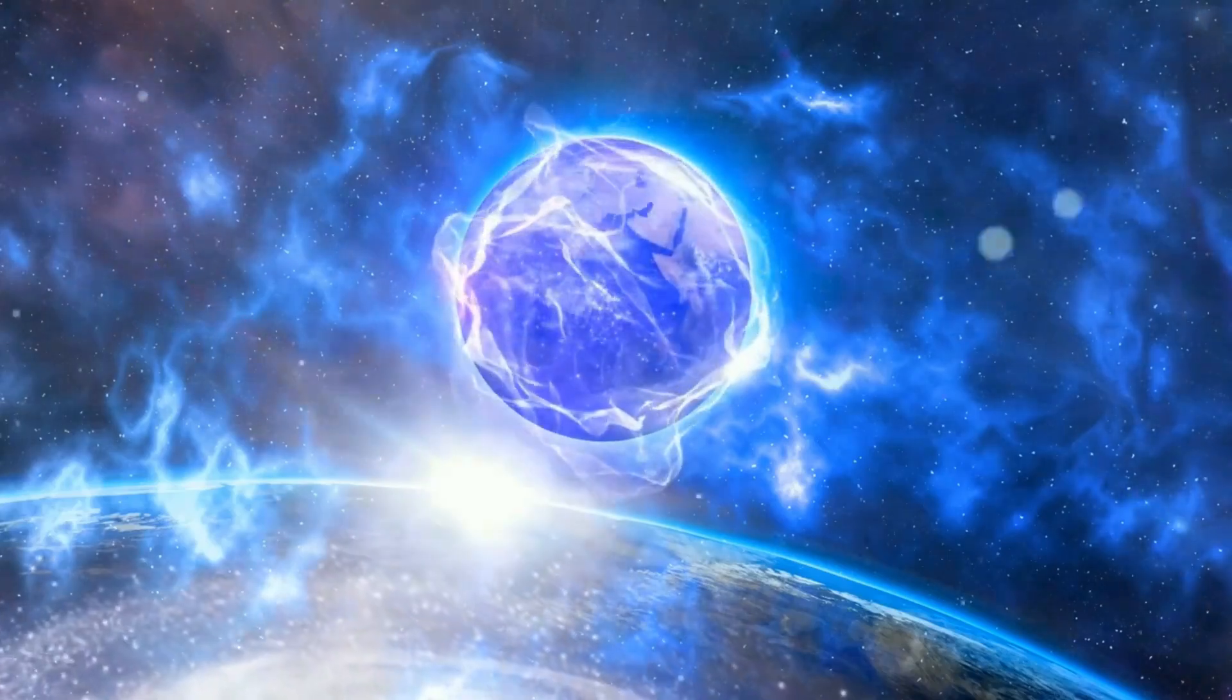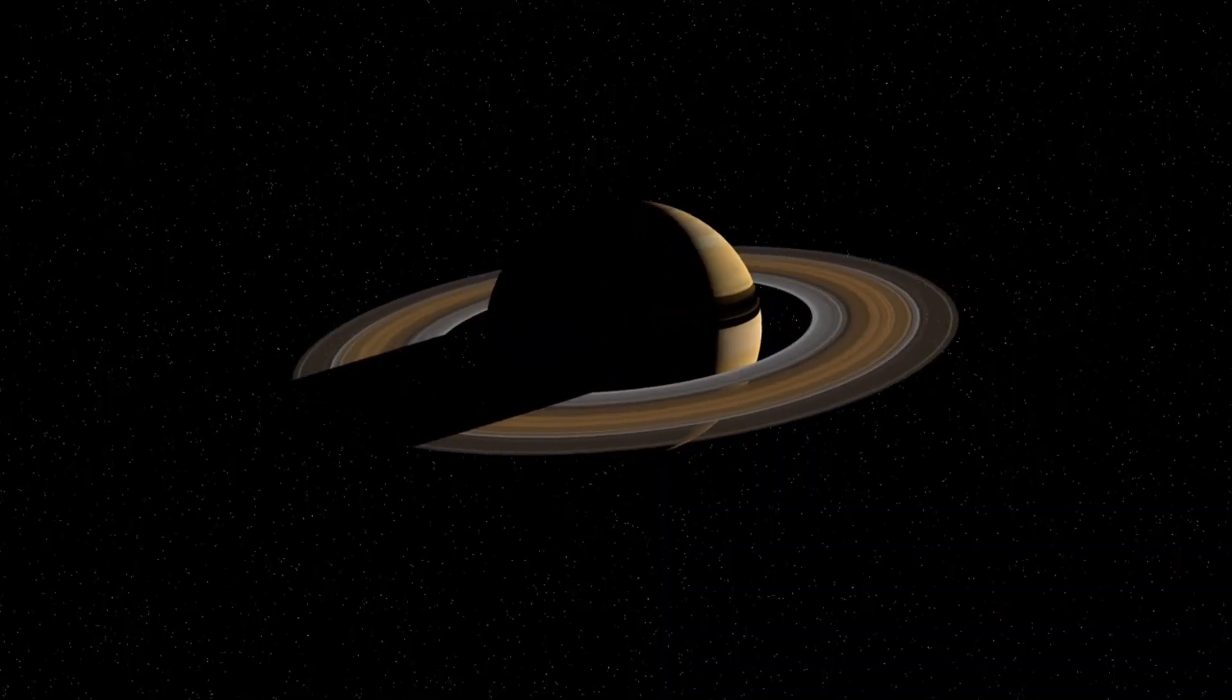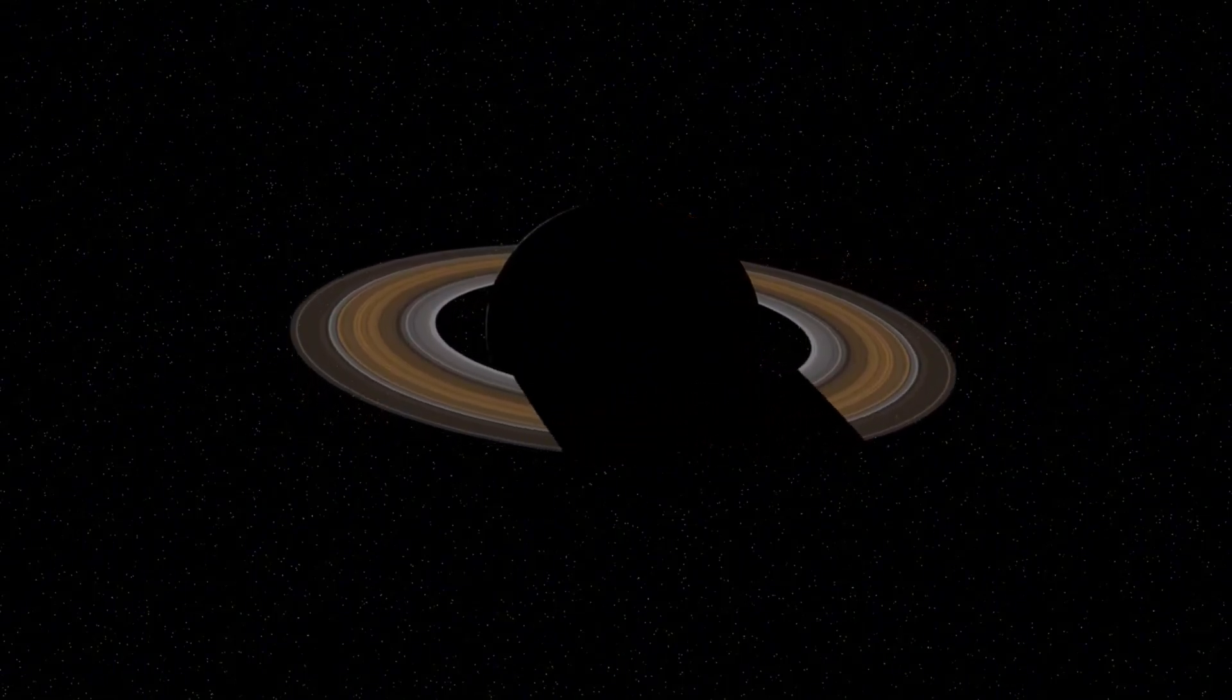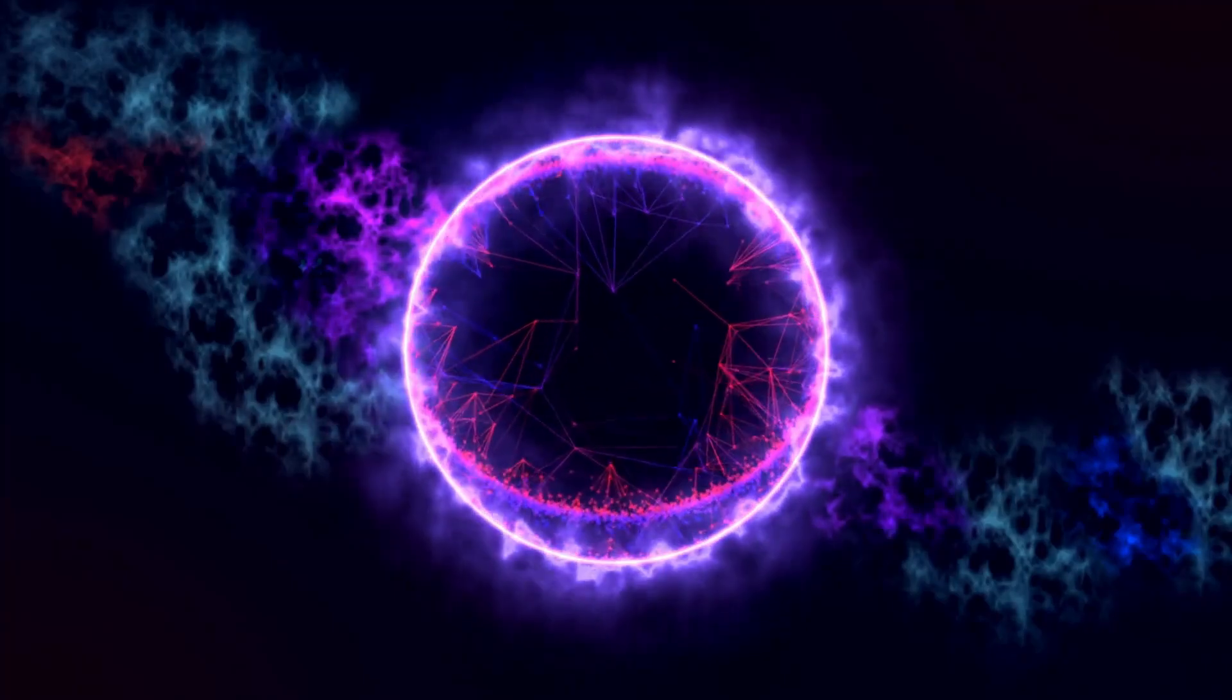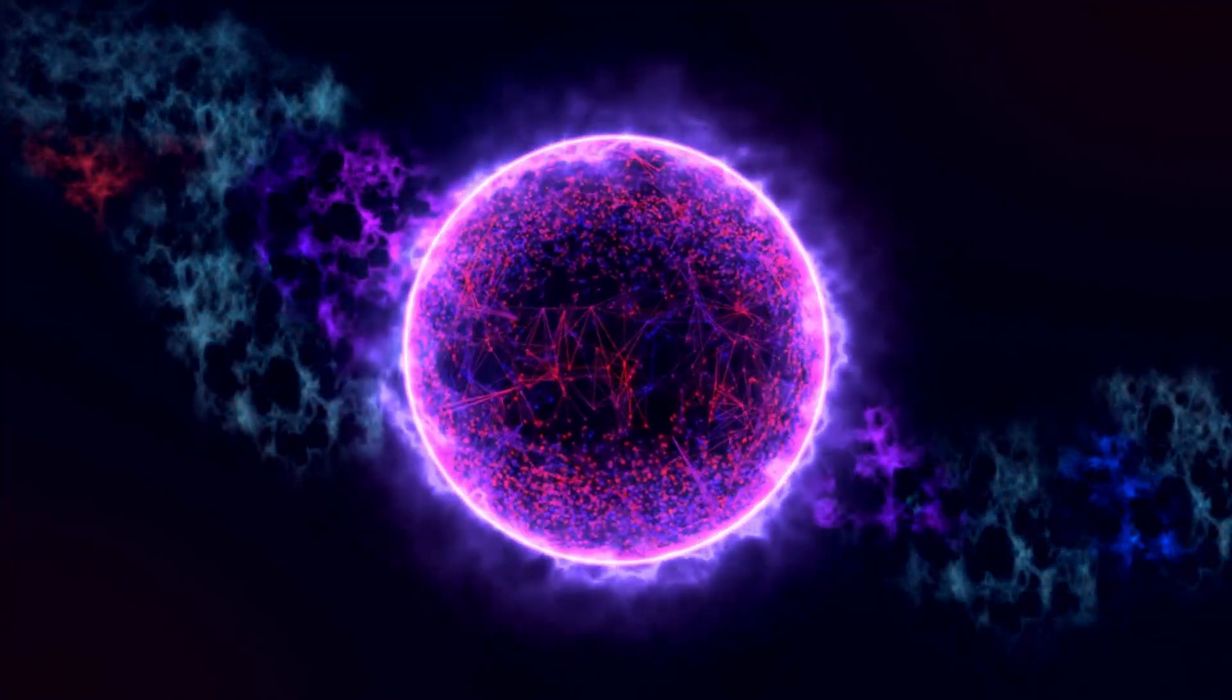Primordial black holes could explain the existence of the seemingly impossible galaxies Webb has observed, acting as gravitational anchors that sped up galaxy formation. But their presence also raises a troubling question: What else about the early history of the universe are we missing?